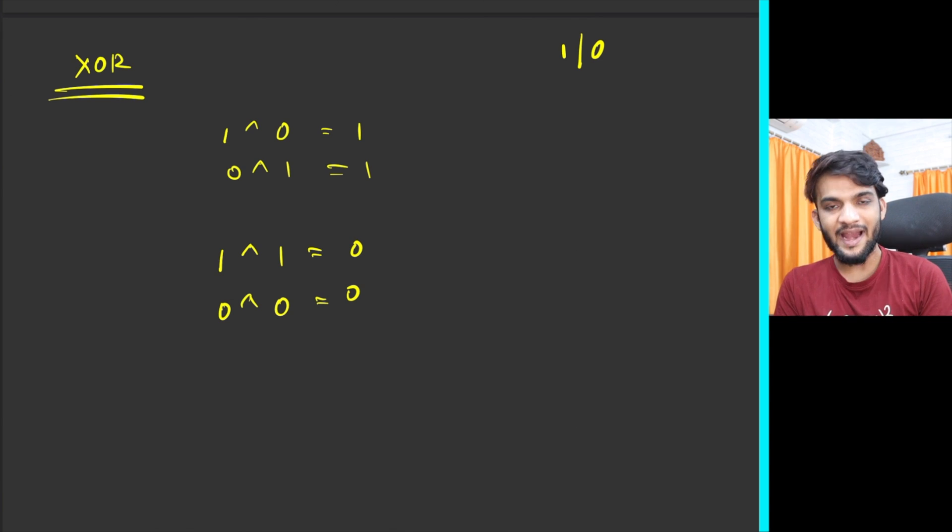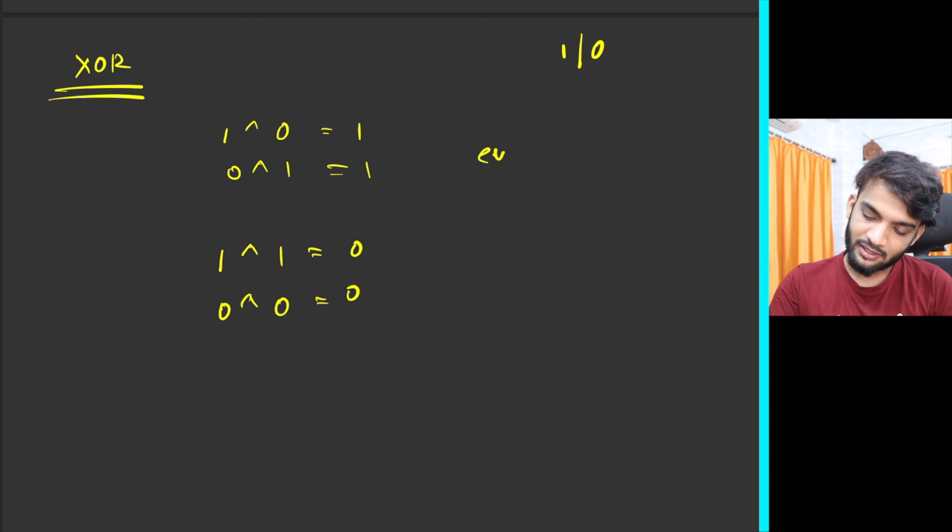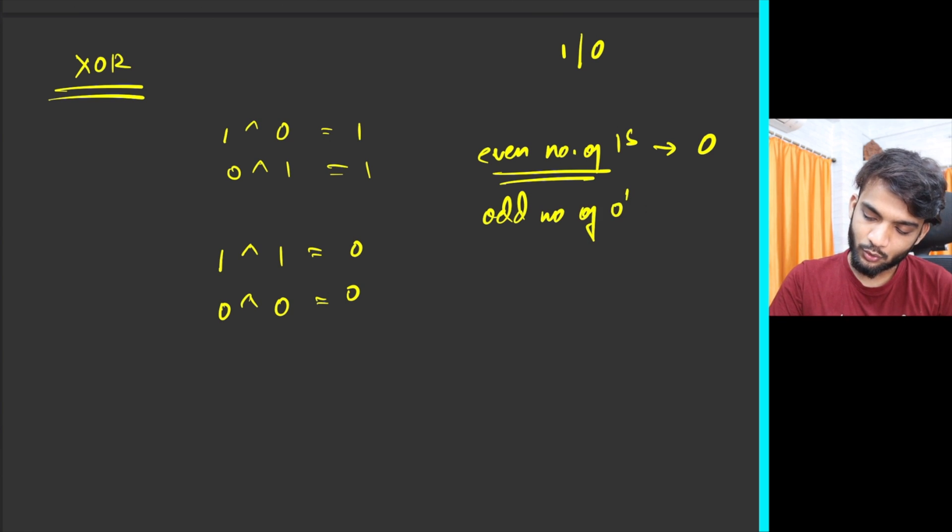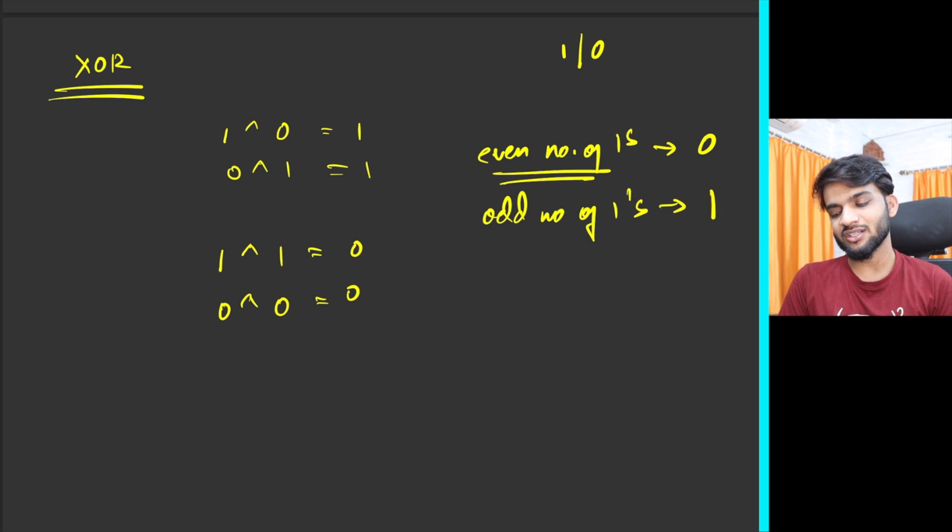Whenever you do XOR of similar bits, you get zero. If I expand that, I can say if there are even number of ones it gives you zero. If there are odd number of ones, then it gives you one. This is the funda of XOR.